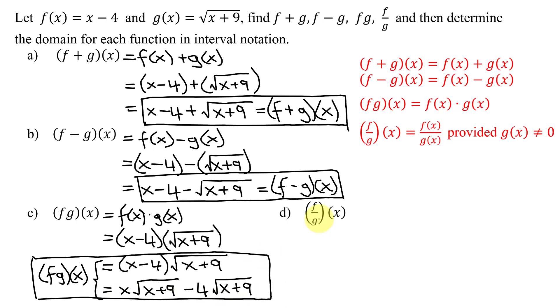And lastly, I need to find the quotient function f divided by g of x, which by definition is f of x divided by g of x, provided g of x does not equal 0. So what is f of x? It's x minus 4. I don't need parentheses in this case because the division bar is a grouping symbol. Divided by g of x is the square root of x plus 9. Can I simplify anything? No.